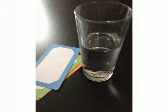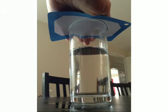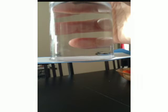Take a glass and fill it with water. Cut a piece of cardboard of size slightly bigger than the mouth of the glass. Place the cardboard on the mouth of the glass. Press the cardboard with your thumb and slowly invert the glass. Remove your thumb.